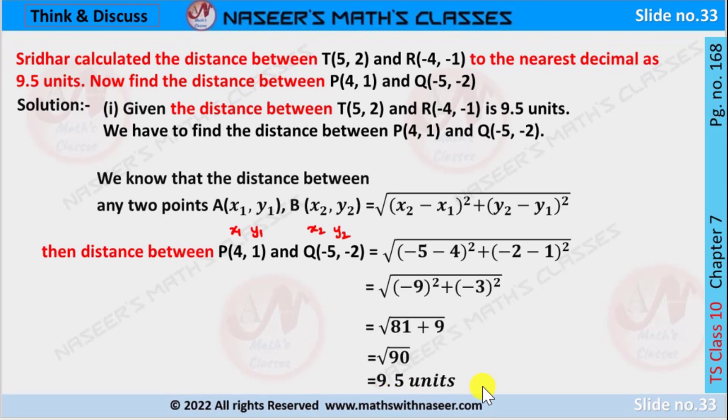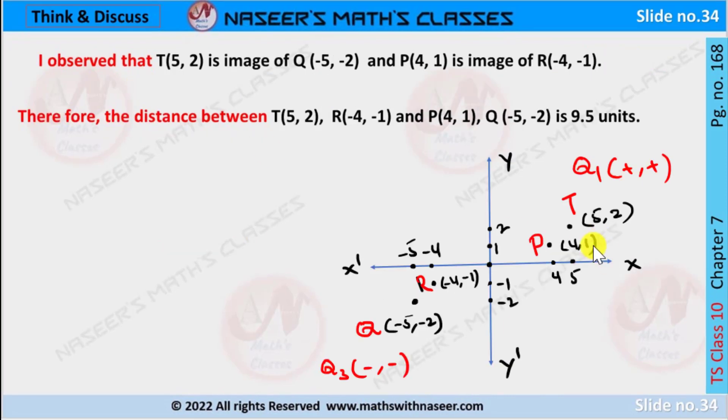By observing, we can say that T(5, 2) is the image of Q(-5, -2), and P(4, 1) is an image of R(-4, -1). Therefore the distance between T(5, 2) and R(-4, -1), and P(4, 1) and Q(-5, -2), is the same as 9.5 units.